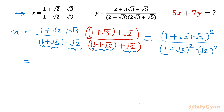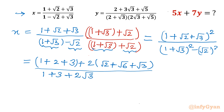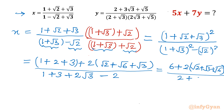Now I will use the algebraic identity (a + b + c)² = a² + b² + c² + 2(ab + bc + ca). So the numerator expands to 1 + 2 + 3 + 2(√2 + √6 + √3), which gives 6 + 2(√2 + √3 + √6). The denominator expands using (a + b)² = a² + 2ab + b², giving 1 + 3 + 2√3 − 2, which simplifies to 2 + 2√3.